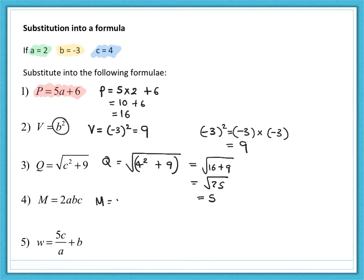Number four, m is equal to two times a, times b, which is negative three times c, which is four. Just read left to right. Two times two is four. Four times negative three is negative 12. And negative 12 times four is negative 48.